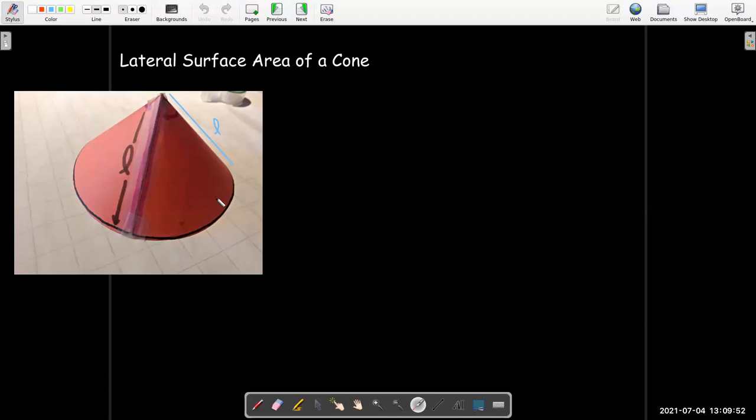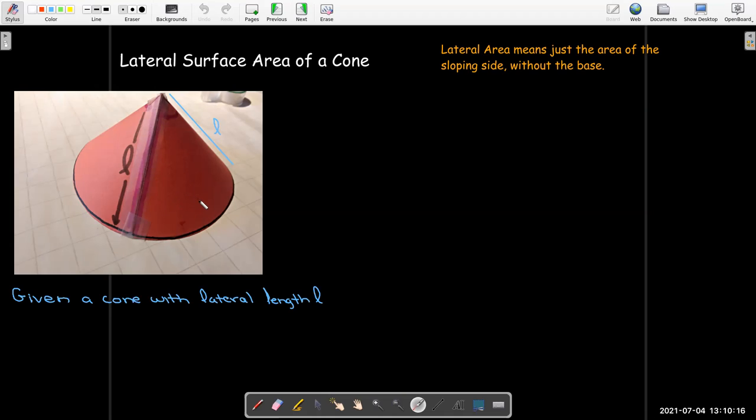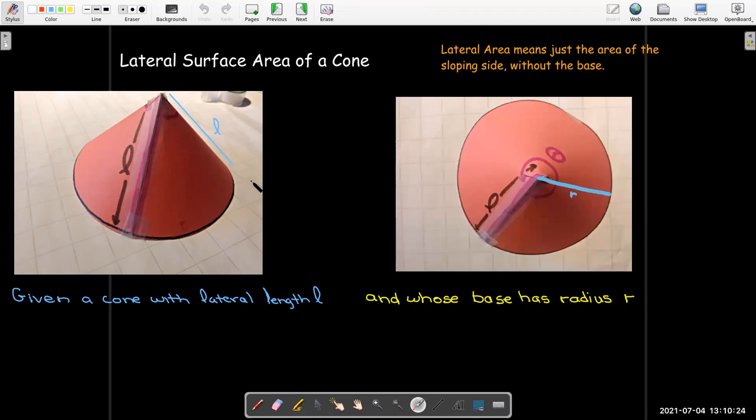So let's see if we can find a formula for the lateral area of a frustum of a cone. Let's start. Here's an actual picture of a physical model that I made to figure out what is the lateral surface area of the entire cone. We'll start with that. Just to emphasize, lateral area just means along the sloping side.